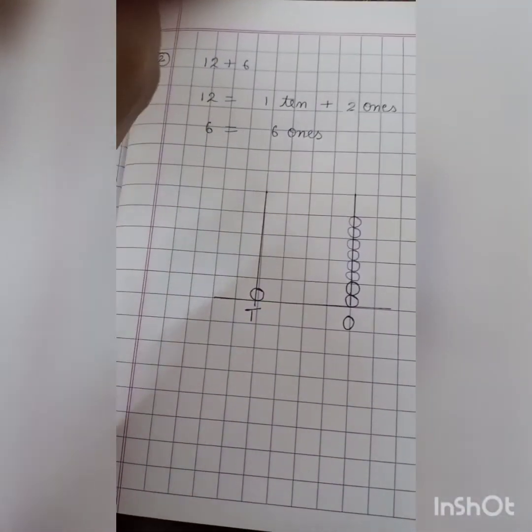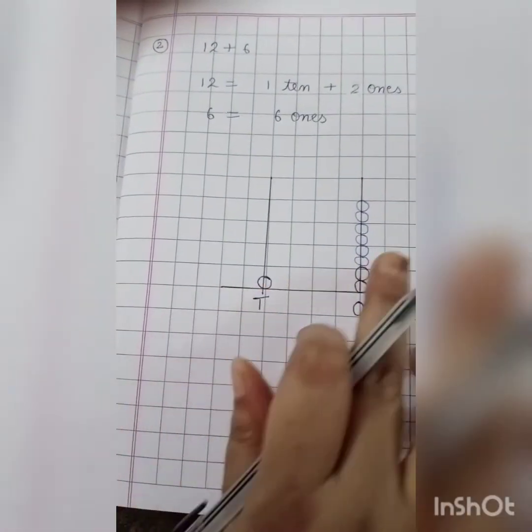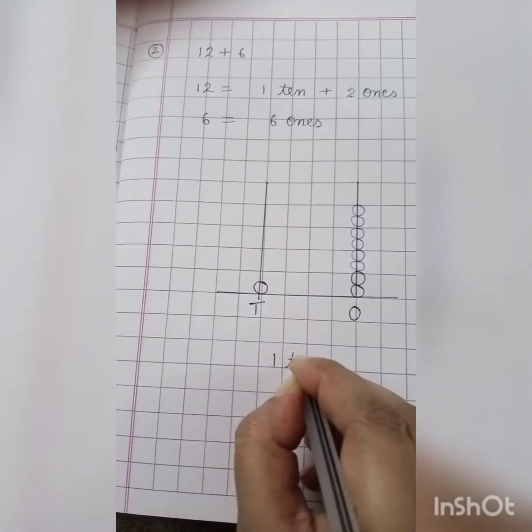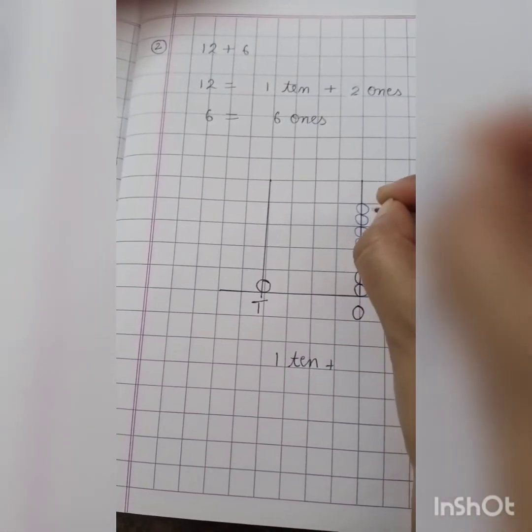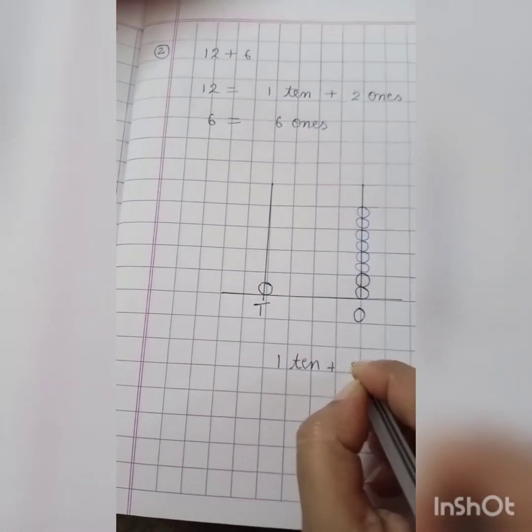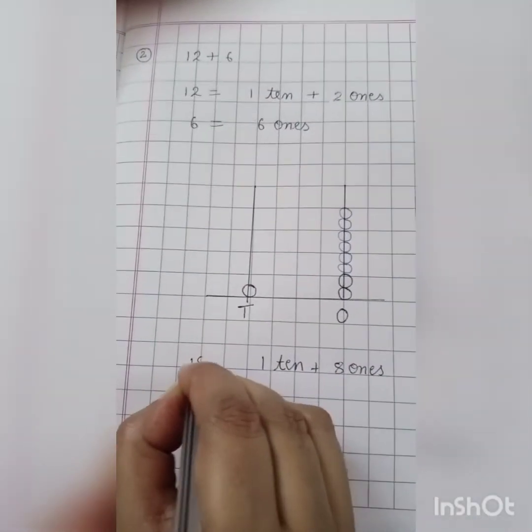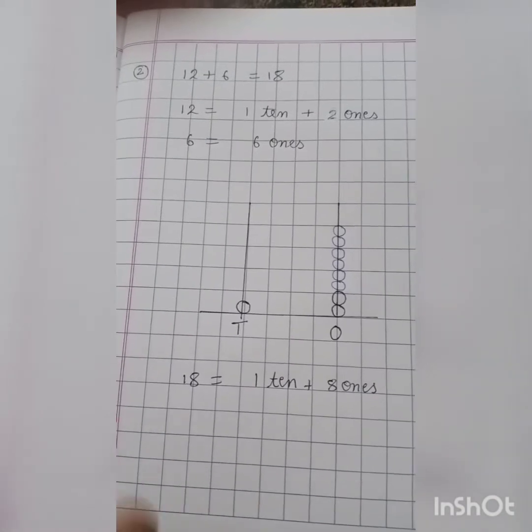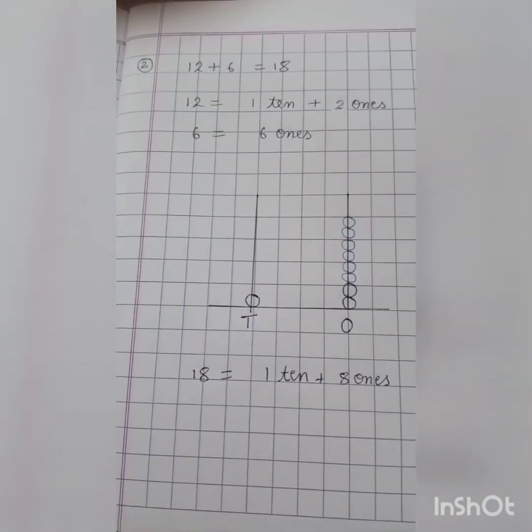So which number is this? After adding 6 to 12, which number we get? 1 ten plus 1, 2, 3, 4, 5, 6, 7 and 8 ones, 8 ones. So our answer is 18. Our answer is 18. So we got number 18 after adding 6 to number 12.